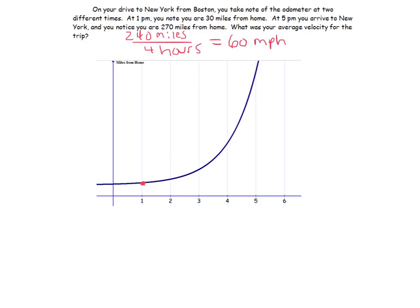So that averages out to 240 divided by 4, which is 60 miles per hour — a pretty simple computation. Now, you probably didn't think of it this way, but if you graph your distance from home, what we really just calculated is the slope of a line. The x-axis is time — 1 p.m., 2 p.m., 3 p.m. — and the y-axis is distance from home in miles. At 1 p.m. we're 30 miles from home, and at 5 p.m. we're 270 miles from home.